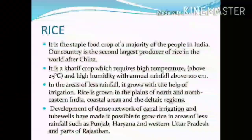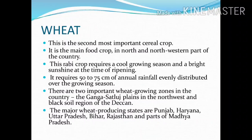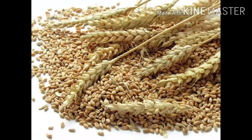Now let us see wheat. The second most important cereal crop is wheat. It is the main food crop in the north and north-western part of the country. Wheat requires a cool growing season with 50 to 75 cm of annual rainfall and bright sunshine at the time of ripening. Wheat-growing regions are the Ganga-Satluj plains in the north-west and black soil regions of the Deccan. The major wheat-producing states are Punjab, Haryana, Uttar Pradesh, Bihar, Rajasthan, and parts of Madhya Pradesh.